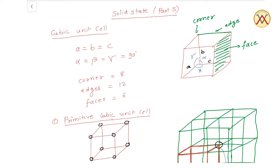इस वीडियो में अपन बात करेंगे cubic unit cell या cubic crystal system की. Cubic crystal system में जो ages होती है A, B, C तीनो equal होती है और interfacial angles alpha, beta, gamma तीनो 90 degree होते हैं. Cube में हम कहां कहां पर constituent particles को रख सकते हैं उसके basis पर तीन तरह के arrangement होते हैं — पहला primitive, दूसरा body centered और तीसरा face centered.